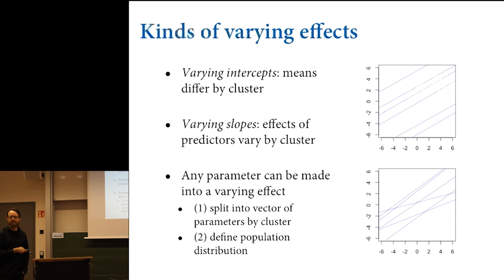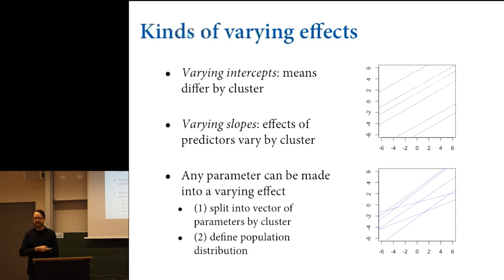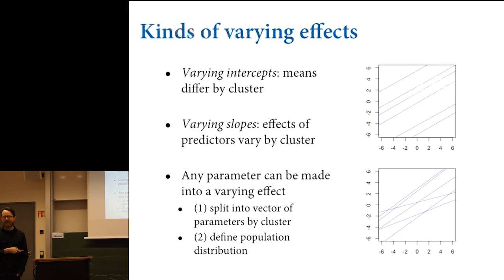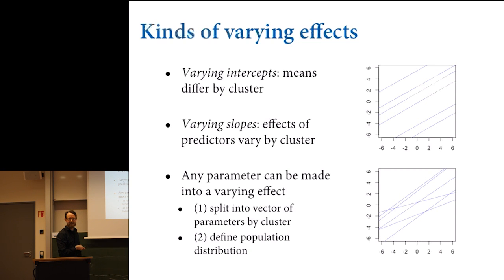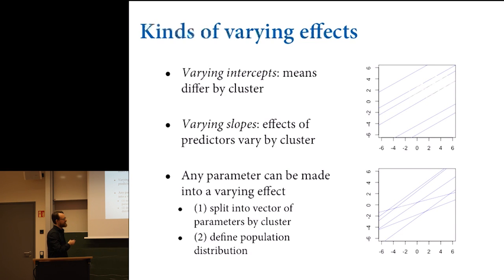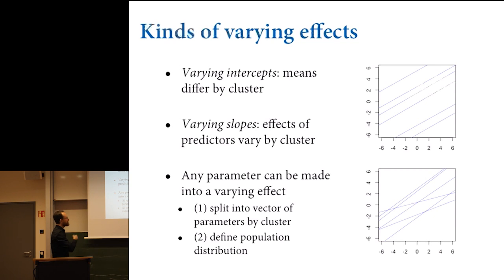With varying intercepts, you get different regression lines for each cluster, all parallel because they have the same slope. But if the intercepts vary, chances are the slopes vary too — because slopes and intercepts tend to co-vary. If you change the intercept, you tend to change the slope, otherwise the line won't pass through the data. So if the average can vary across clusters, the effect of some treatment can also vary.